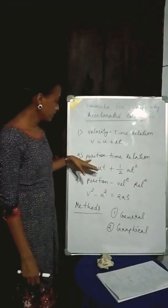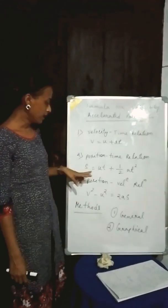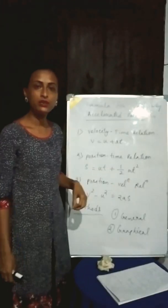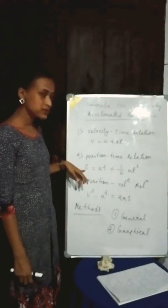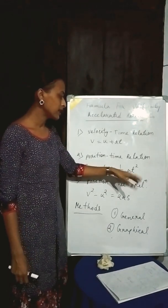The second formula is known as position-time relation and it is represented as S equals U plus half of AT squared, where S is the distance covered by the moving object, U initial velocity, A acceleration, T time.